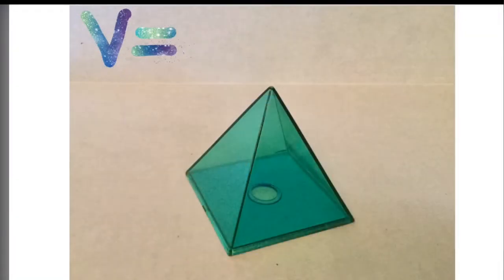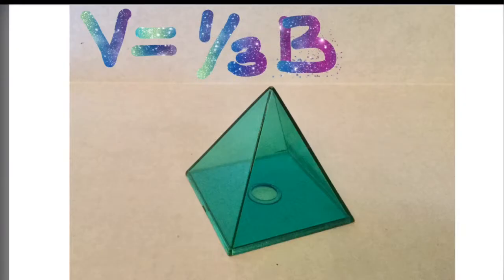So if we use the formula that we've identified, which is one third of big B, area of the base, times the height of the shape, we can break it down and find each piece. Of course, we need to identify that base. You can't find the area unless you know what you're looking at.